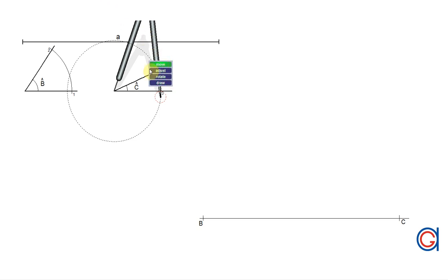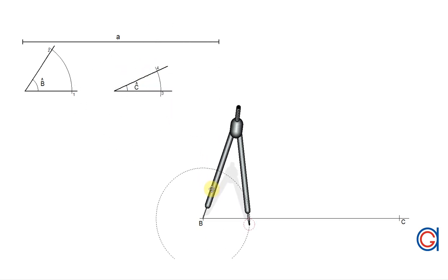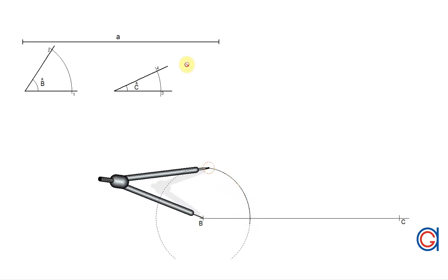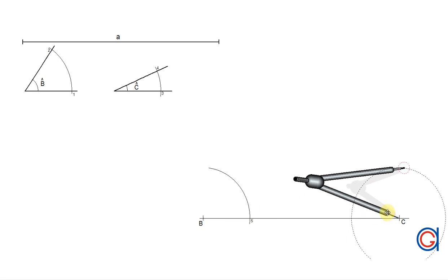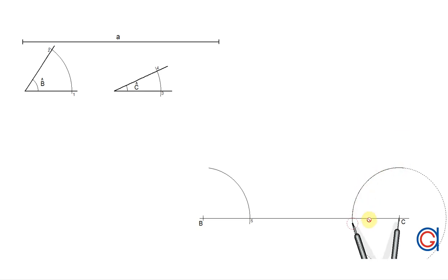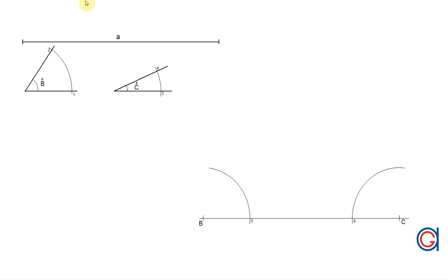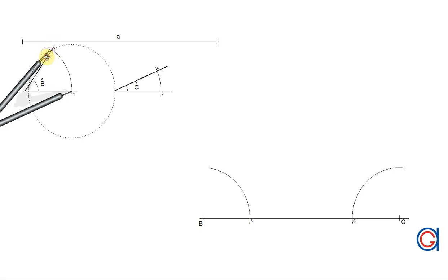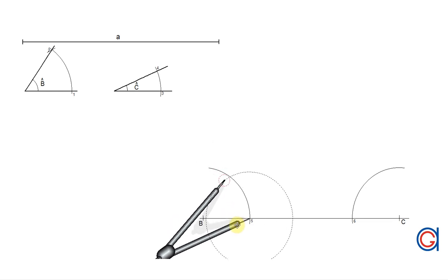With the same radius, with the compass set on point B of the horizontal line, we scribe another arc until it cuts the horizontal line at point five. Scribe an arc to the left. Now, setting our compass to the radius one-two, we transport this length to the previously drawn arc, setting our compass on point five and scribing an arc to the right until it cuts the previously drawn arc at a new point seven.